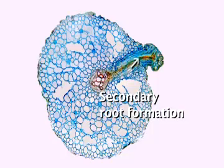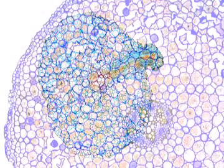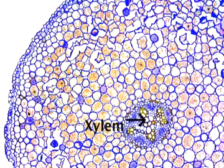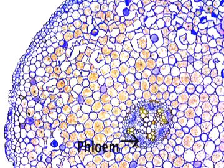The pericycle marks the boundary of the stele, the circular central area of the root that contains all of its vascular tissues, consisting of large tubes of the xylem that transports water up from the root into the stem, and smaller tubes of the phloem that carries carbohydrates produced in the leaves down into the roots.